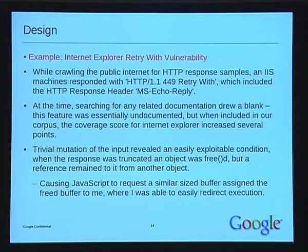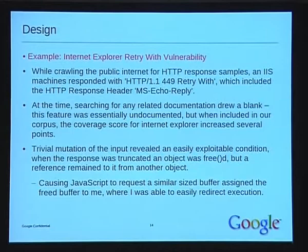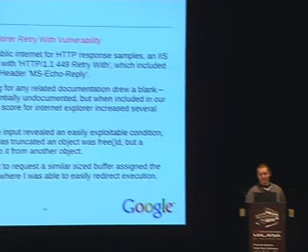It turned out that trivial mutation of this input revealed some easily exploitable conditions. If I truncated the response, some objects containing the HTTP headers were freed but a reference remained to them in another object. You could request a similar-sized buffer in JavaScript, and once it's assigned to you it's game over — just clobber the VTable or something and you can redirect execution.